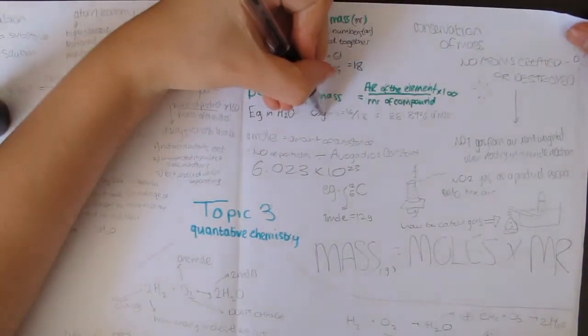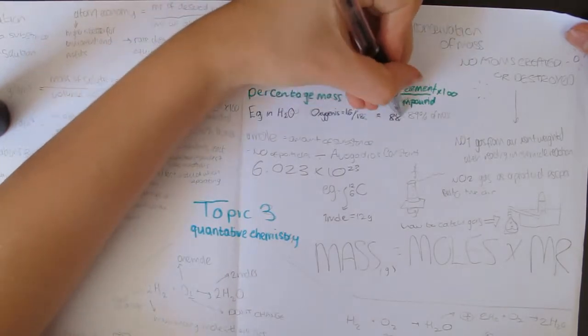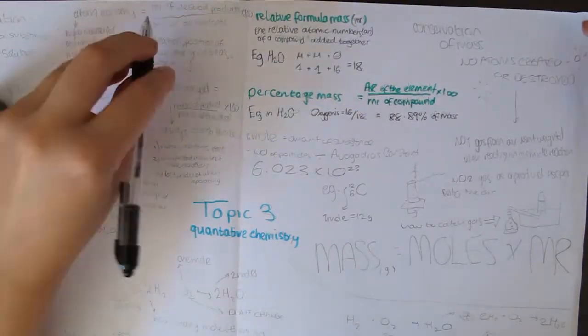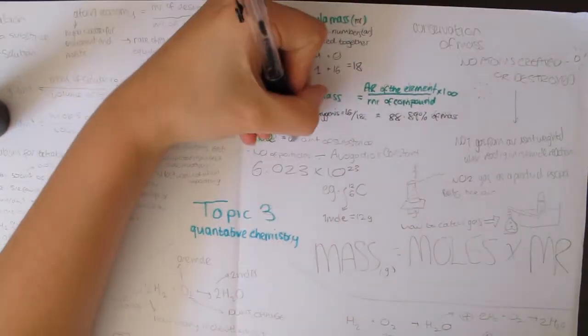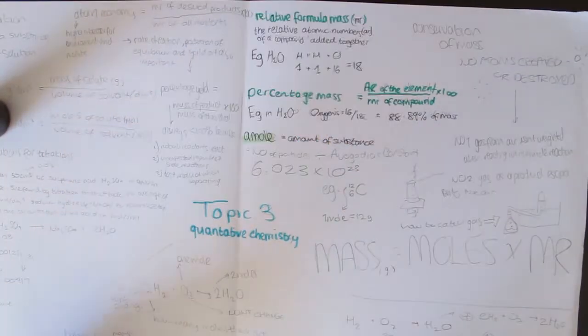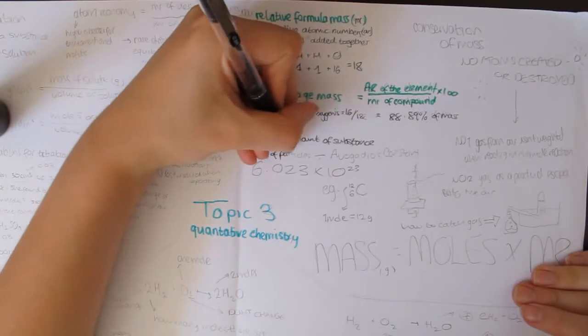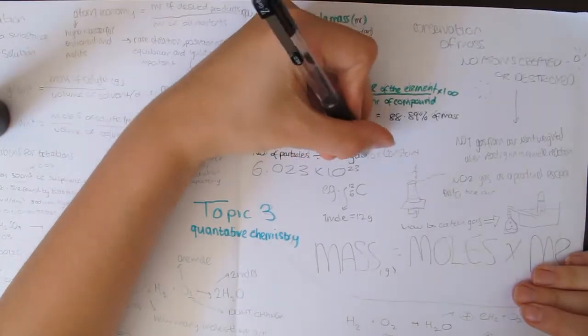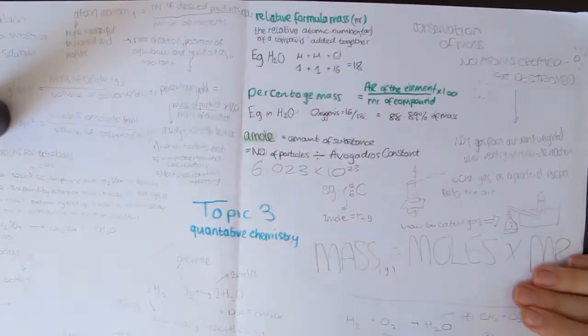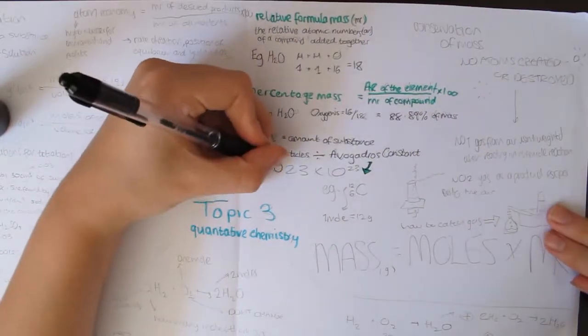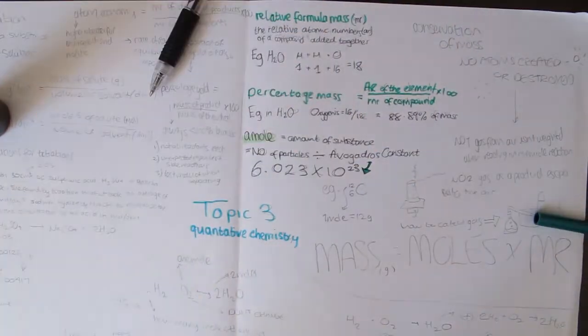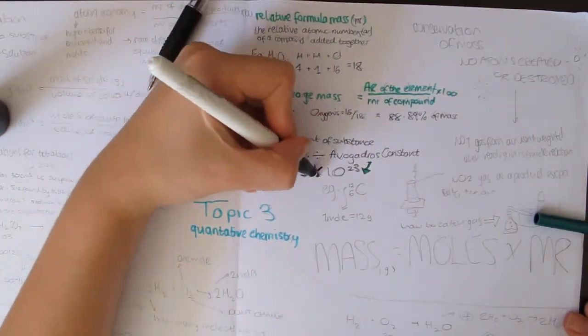A mole is simply the name given to an amount of substance, or more specifically the number of particles divided by Avogadro's constant, which is 6.023 times 10 to the power of 23. This is very useful for chemists, because it turns out one mole of molecules of any substance will have a mass in grams equal to the AR or MR of that substance.